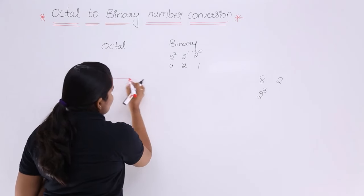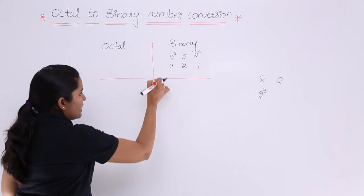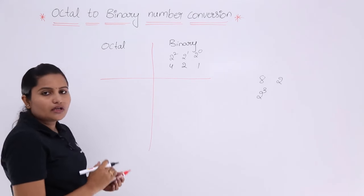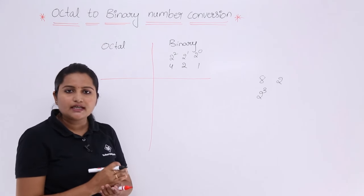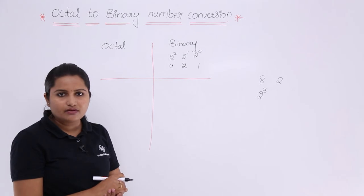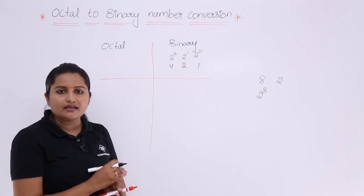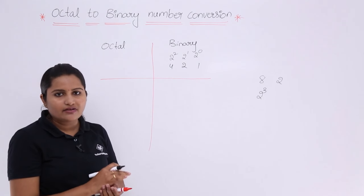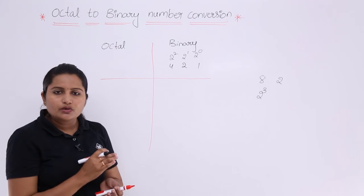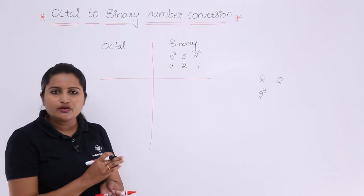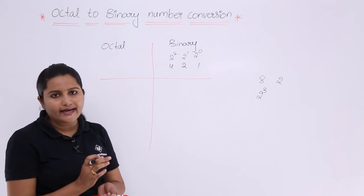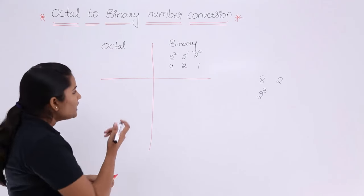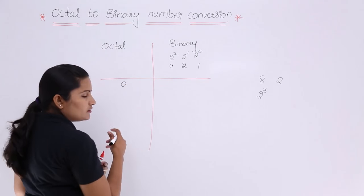Now using this reference I am going to design the octal to binary conversion table. In octal, since the base is 8, you have numbers from 0 to r minus 1 where r is the radix. Since the radix is 8, you have numbers from 0 to 7 — that is 8 numbers total in the octal number system.